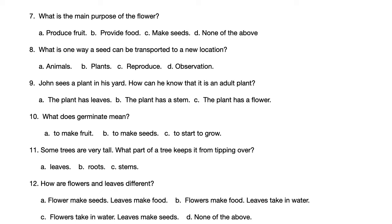Number 8. What is one way a seed can be transported to a new location? A. Animals. B. Plants. C. Reproduce. D. Observation.